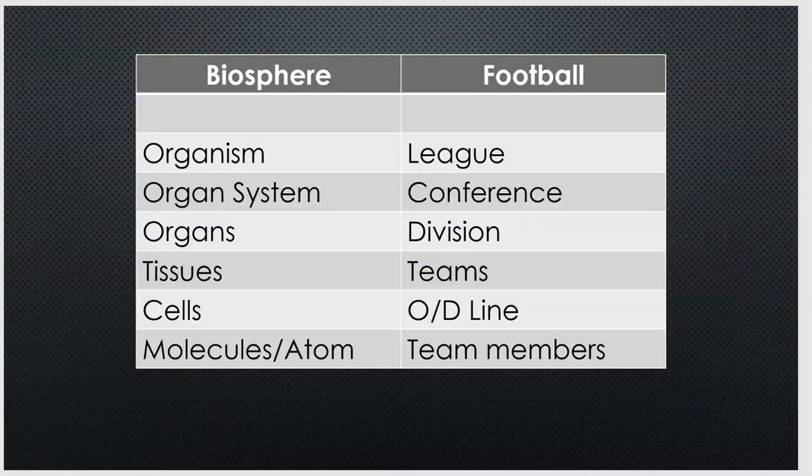So we talk about living things or our biosphere and we compare it to football. Maybe we've got an organism — that's a living thing. I'm going to talk about a complex living thing, like let's say a human. We're going to compare that human to the league, the NFL, the National Football League. We could take that human and break it down into different organ systems: we've got a muscular system, a cardiovascular system, a reproductive system, a digestive system. In football, we take that league and break it down into two conferences — the AFC and the NFC.